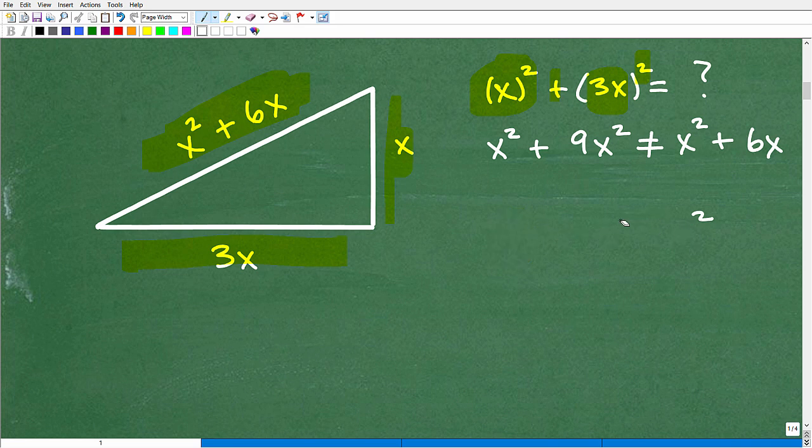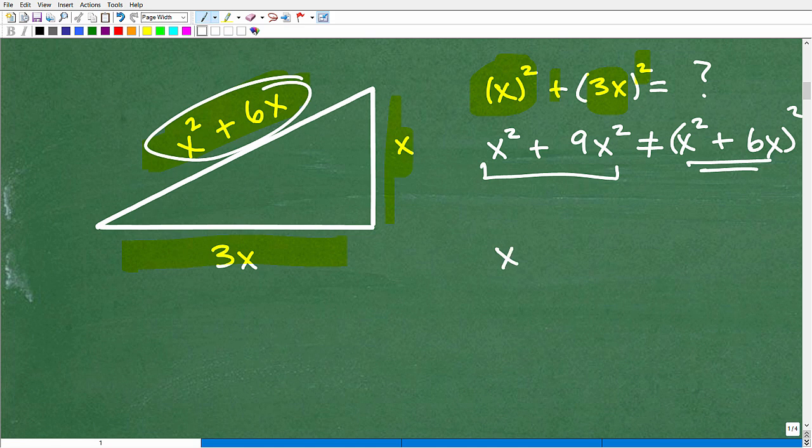And I'll go ahead and do this real quick. So x squared plus this 3x squared will be 9x squared. And just so you're not confused about that, 3x squared is the same thing as 3x times 3x, and of course, that's going to be 9x squared. So now we need to go ahead and see is that going to be equal to this squared? And hopefully you can kind of see right off the bat there's no way that's going to be the case.